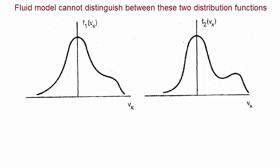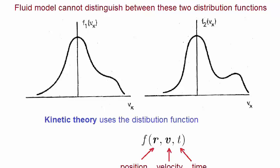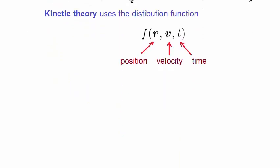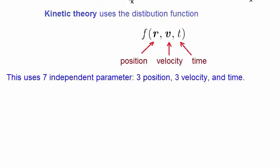The centerpiece of Kinetic Theory is the distribution function. If one can obtain the distribution function, then all the information about a plasma system can be known. There are seven independent parameters, three position, three velocity, and time.